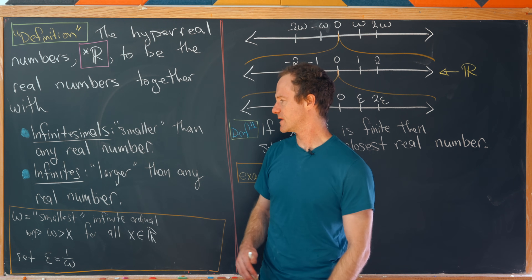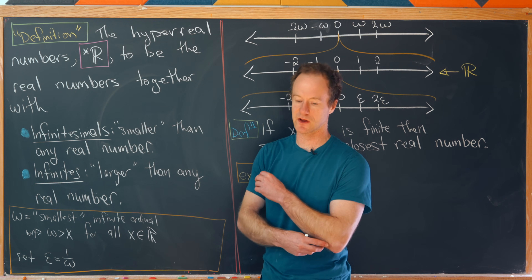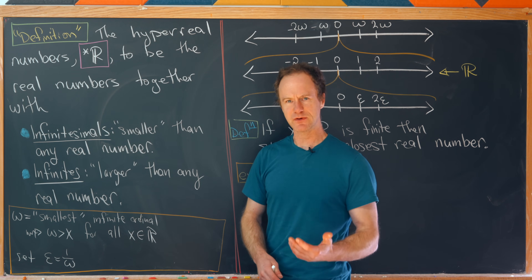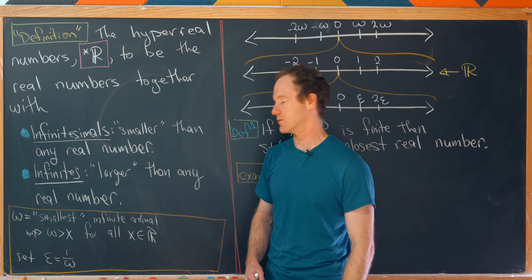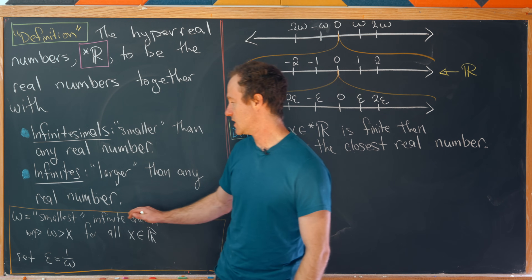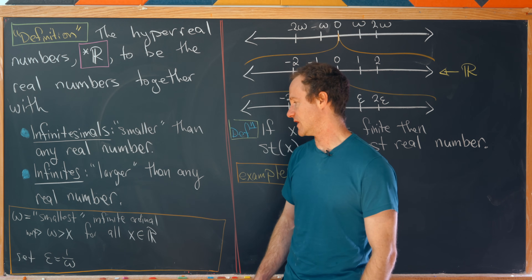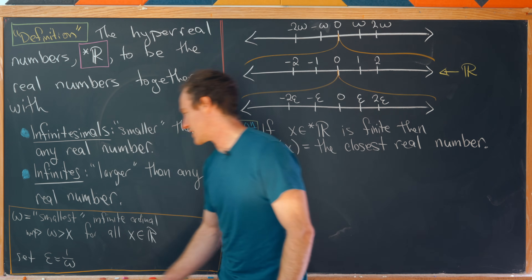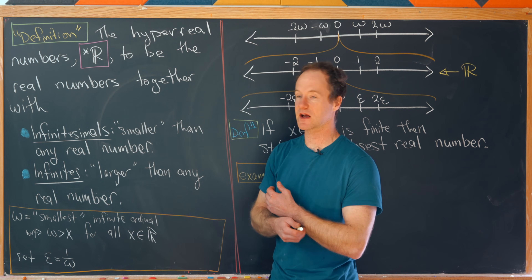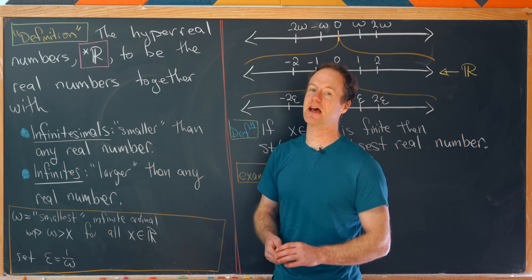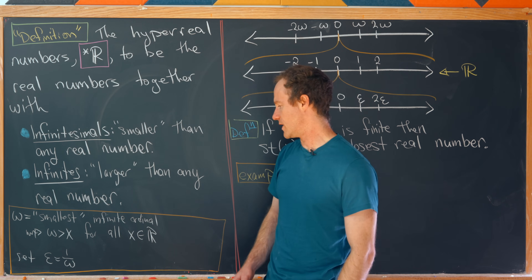We also have something called infinities or infinite numbers, and these are larger than any real numbers. In particular, we're going to use two key objects. We'll call the infinite number omega — it is the smallest infinite ordinal — so omega is bigger than x for all real numbers x. Then we'll define an infinitesimal out of that: we'll call it epsilon, and that's simply 1 over omega.